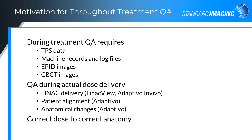The motivation for throughout-treatment QA is to further improve the quality of patient treatment. During-treatment QA provides a method to independently assess patient-specific delivery and requires treatment planning system data, machine records and log files, EPID images, and cone beam CT images. LINAC View and Adaptivo both provide automated during-treatment QA, allowing determination of LINAC delivery issues, patient setup alignment, as well as anatomical changes. Independent QA of during-treatment delivery allows physicists to better quantify whether the correct dose is being delivered to the correct patient anatomy.